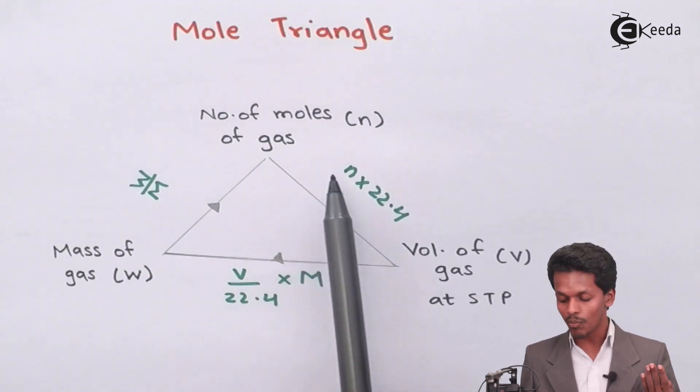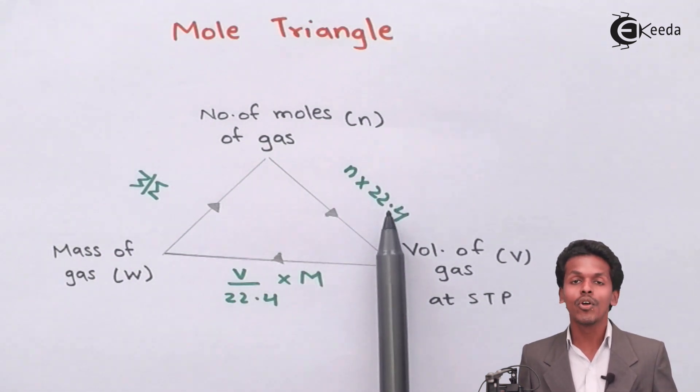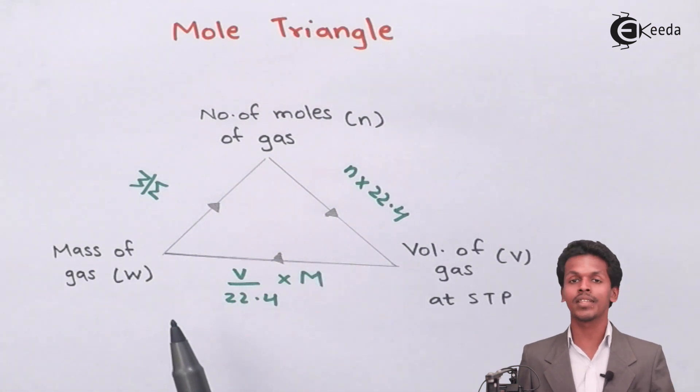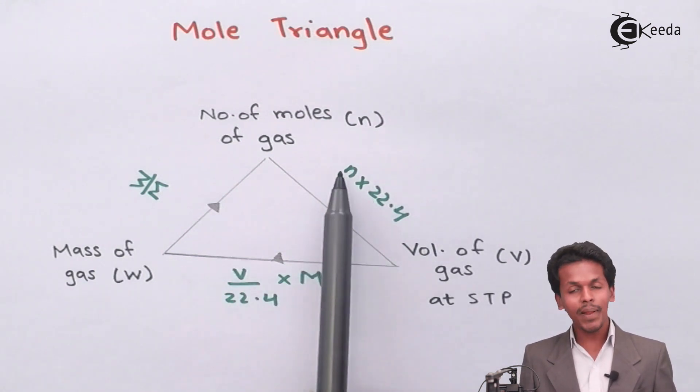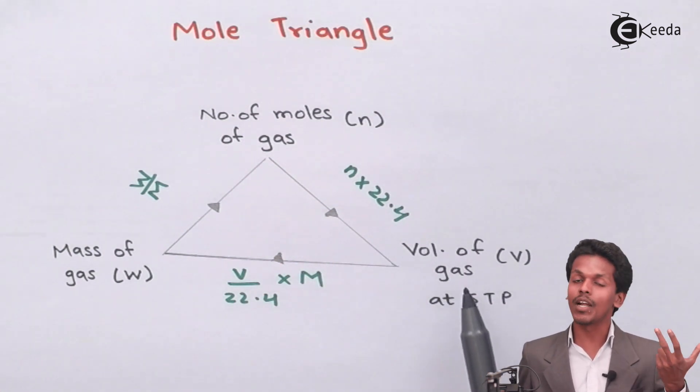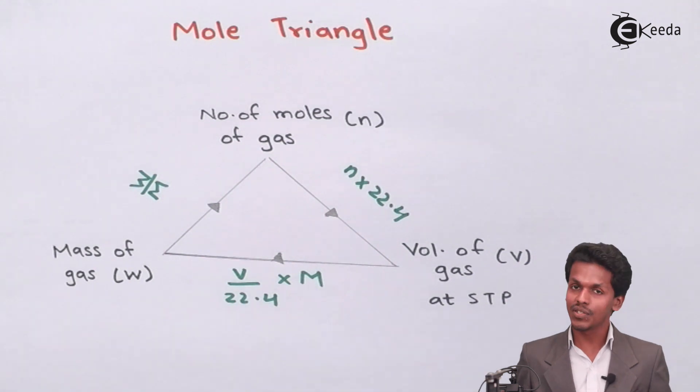In this case, we multiply it by 22.4 dm³. As we know, 22.4 dm³ is the molar volume. So by multiplying n by 22.4 liters, we can easily get the volume of that particular gas at STP.